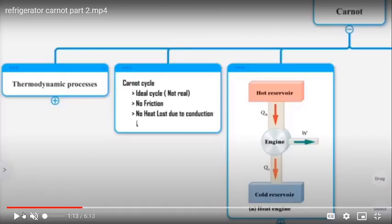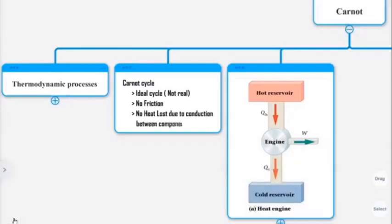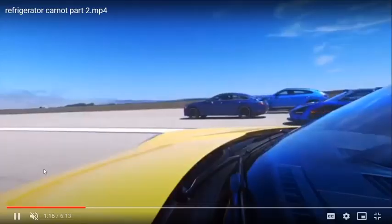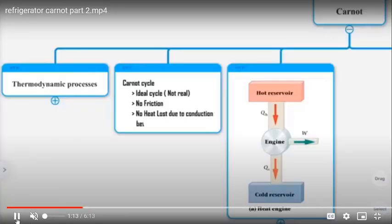The Carnot cycle is an ideal cycle — it is not real. There is no friction and no heat loss. In real engines, friction produces heat, and pistons experience friction, making the ideal Carnot cycle practically impossible.